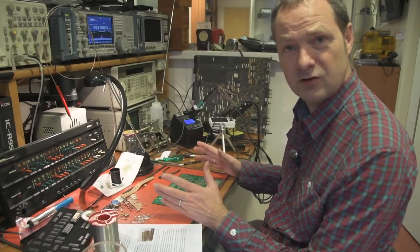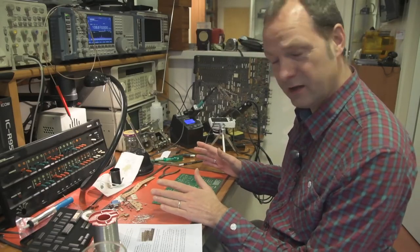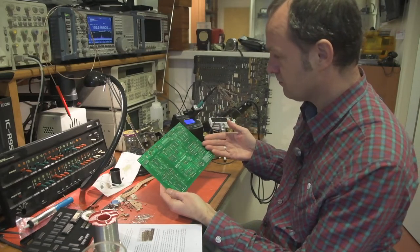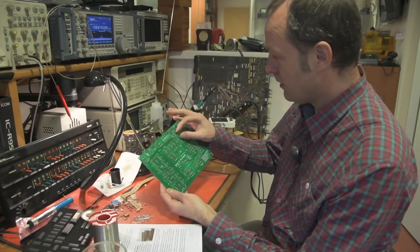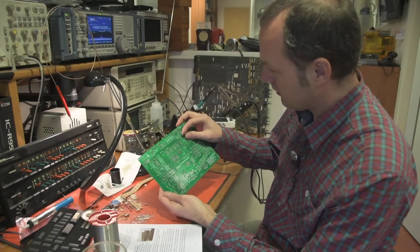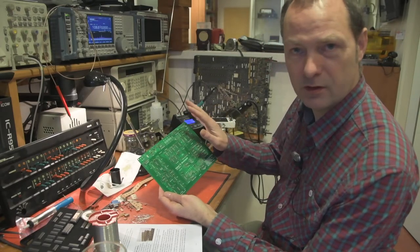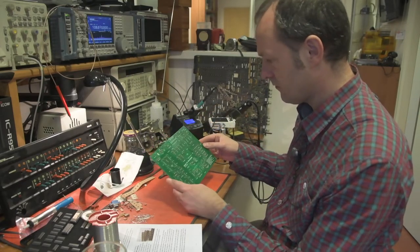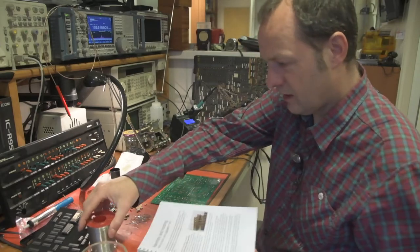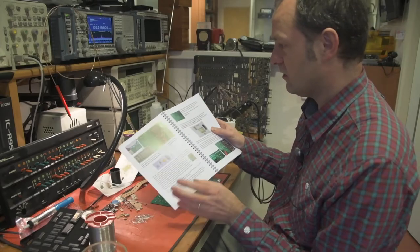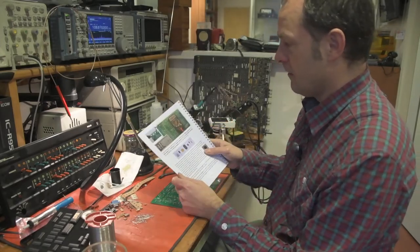All right. This concludes step one. We have soldered in 40 capacitors into the board. They might be a little bit off to the side. That's no problem. We can bend them to sit really straight. But we'll leave that until later. So this is step one. The ceramic capacitors of 100 nanofarads.